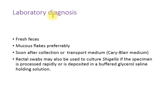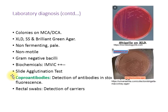For lab diagnosis by stool culture, the feces should ideally be fresh and processed as soon as collected. Mucus flakes present in the feces are suitable for culturing. If there is a delay, a transport medium like Cary-Blair medium can be used. Rectal swabs are not routinely used but may be used to detect carriers; processing should be rapid or the swab kept in buffered glycerol saline holding solution.